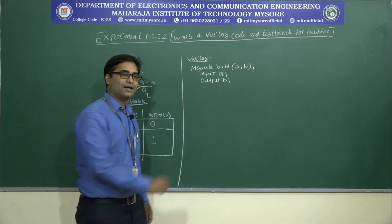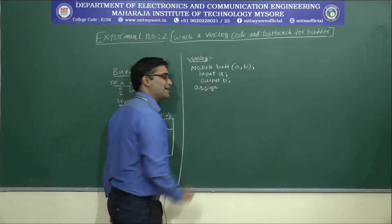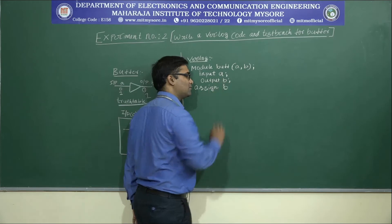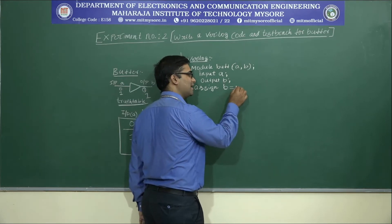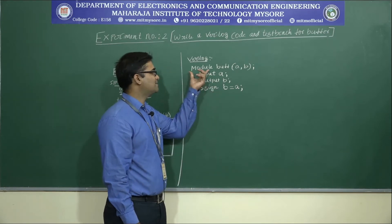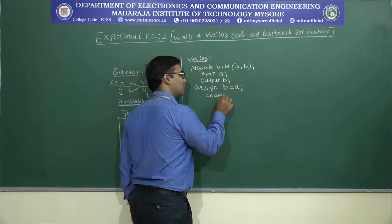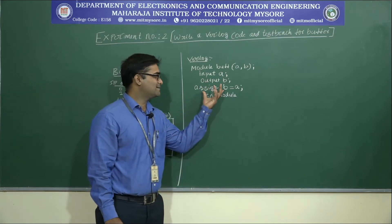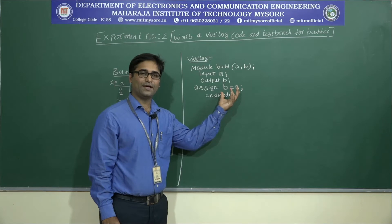Next, we define the port declaration: input as A and output as B. The body declaration uses a continuous assignment statement called 'assign', which assigns the value on a net. Since the output follows the input, we write: assign B = A. This is the body declaration of the buffer. We start with module and end with endmodule. This is the program for the buffer.